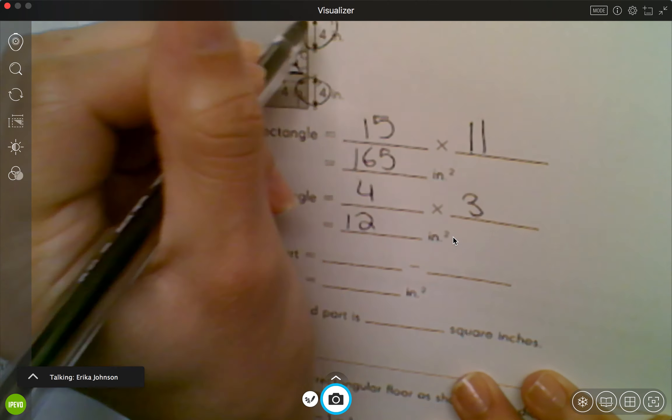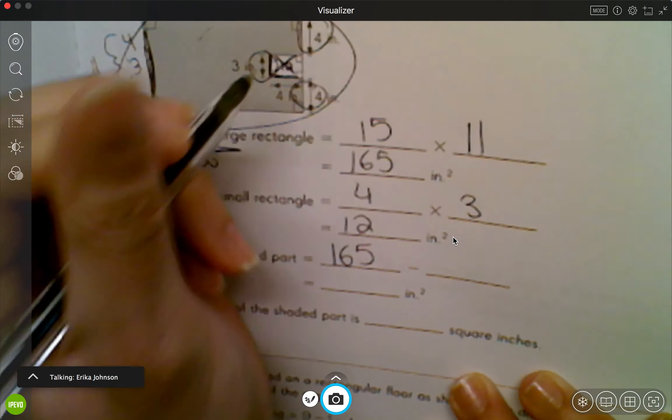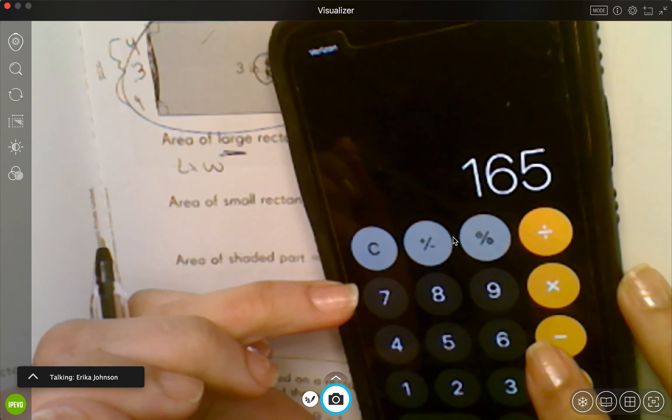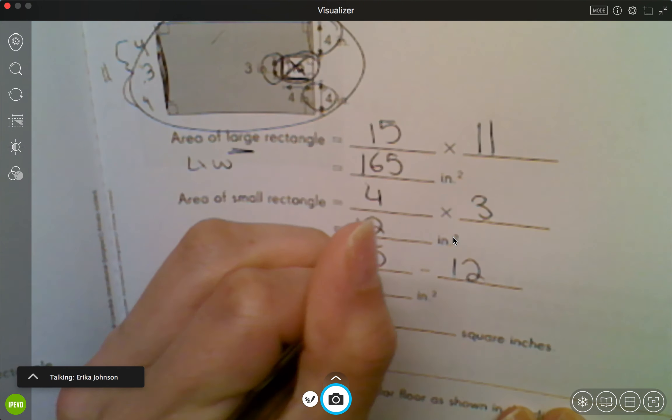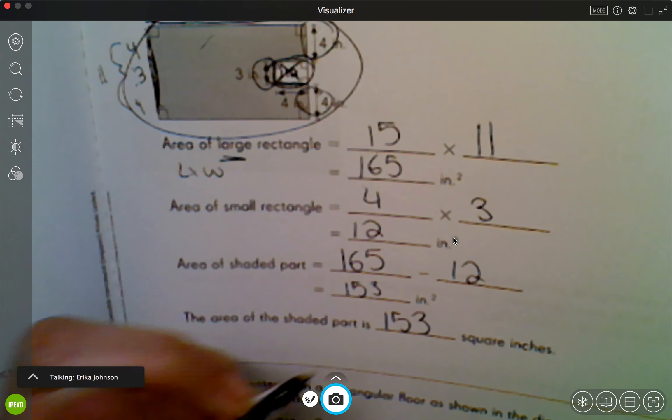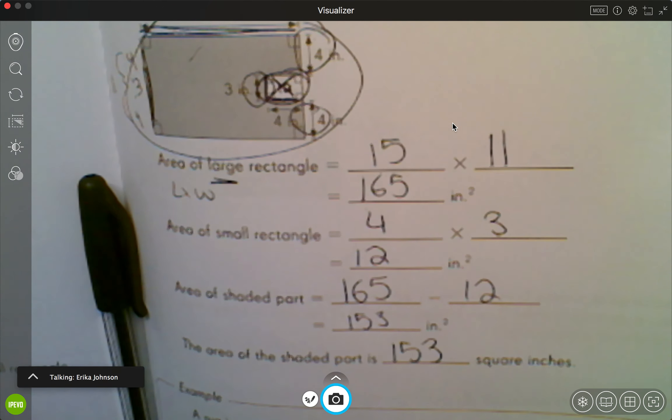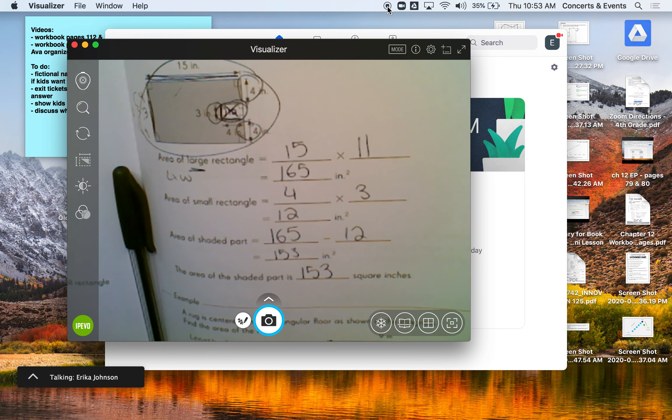So again, if I know this is 12, I want to get rid of that 12 to see what's left. So I'm going to take the area of the whole thing, which was 165, I'm going to take away the area of the small one, which was 12, and then I'm going to do 165 minus 12, and that got me to 153. So I know that this is 153 square inches. We're going to keep practicing this, but hopefully this was helpful and gave you a better understanding of how to solve these problems. All right, bye guys.